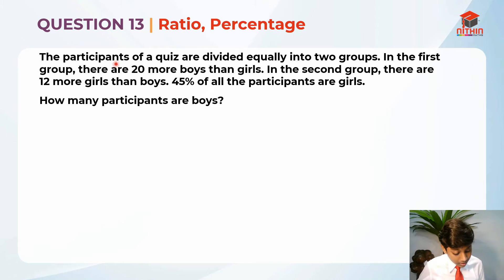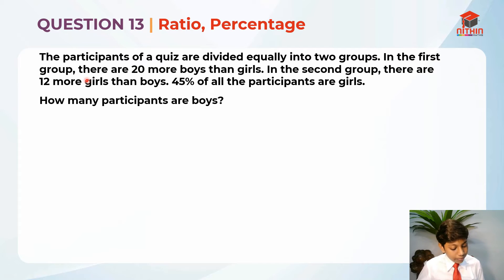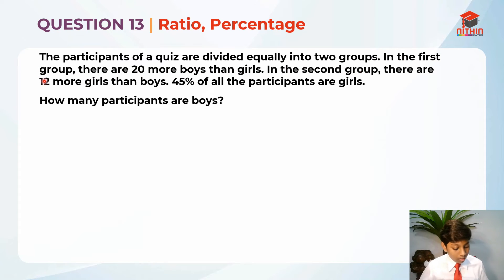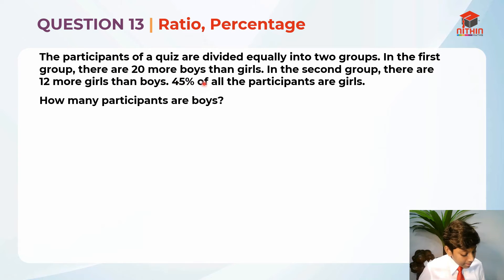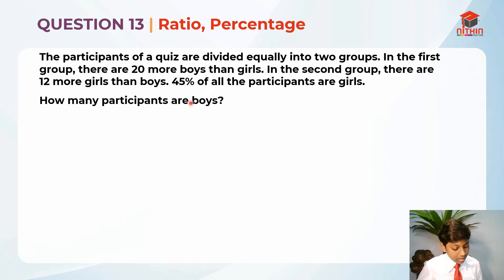The participants of a quiz are divided equally into two groups. In the first group, there are 20 more boys than girls. In the second group, there are 12 more girls than boys. 45% of all the participants are girls. How many participants are boys?